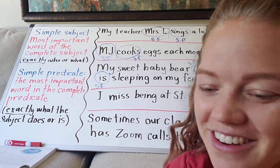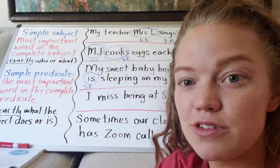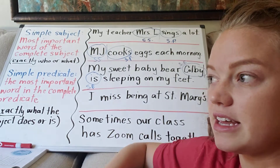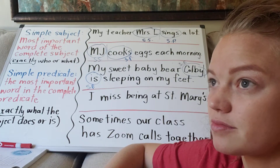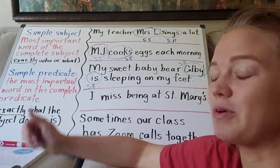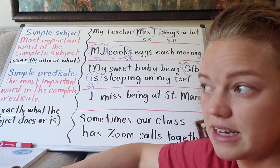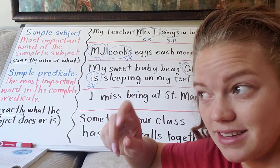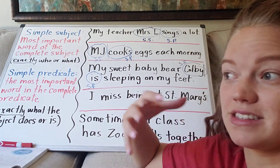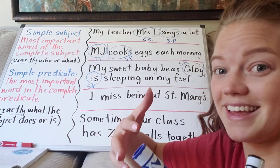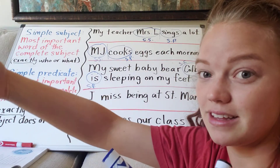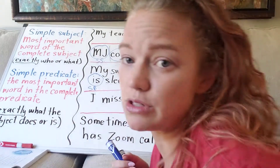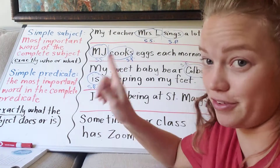We'll practice that more — I know it might seem a little confusing, but it's something to be careful of and look out for. If I said 'someone is eating,' 'is' is the simple predicate because it's the state of doing something, and 'eating' is what that thing they're doing is. It's all about how the sentence is worded, so make sure you're careful of that.